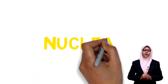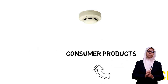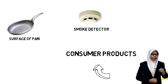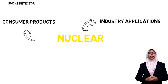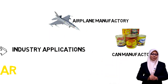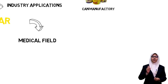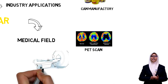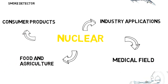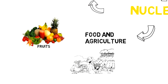Nuclear is used in four fields. The first one is consumer product — for example, the smoke detector and the surface of non-stick pans. The second is industry application, such as aircraft manufacturing and can manufacturing. The third is the medical field — for example, PET scan and radiation therapy. Last but not least, food and agriculture, such as fruits and crops.